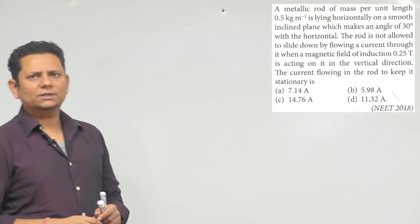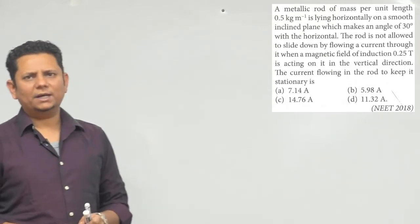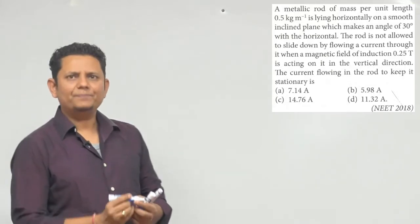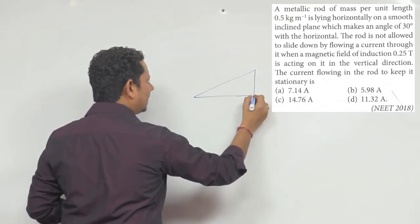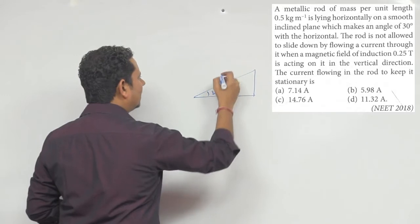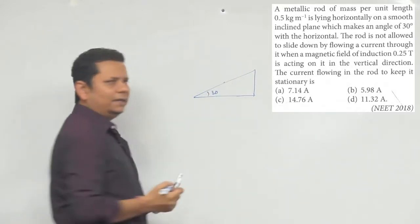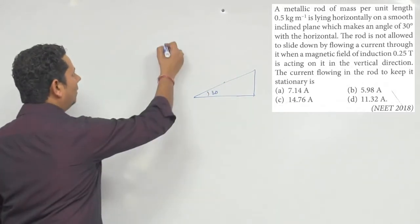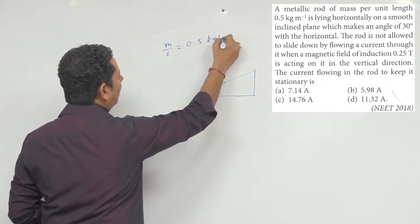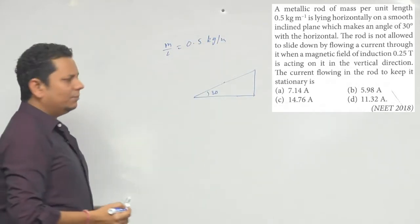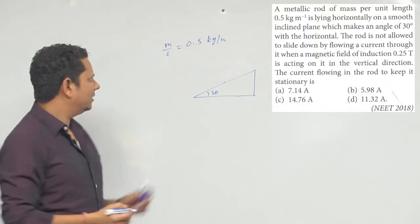Here you can see the concept of NLM and the magnetic force concept. So this is our inclined plane at 30 degree angle and here we have a rod. The rod has given us the mass per unit length, we have 0.5 kg per meter, this is the M by L ratio.